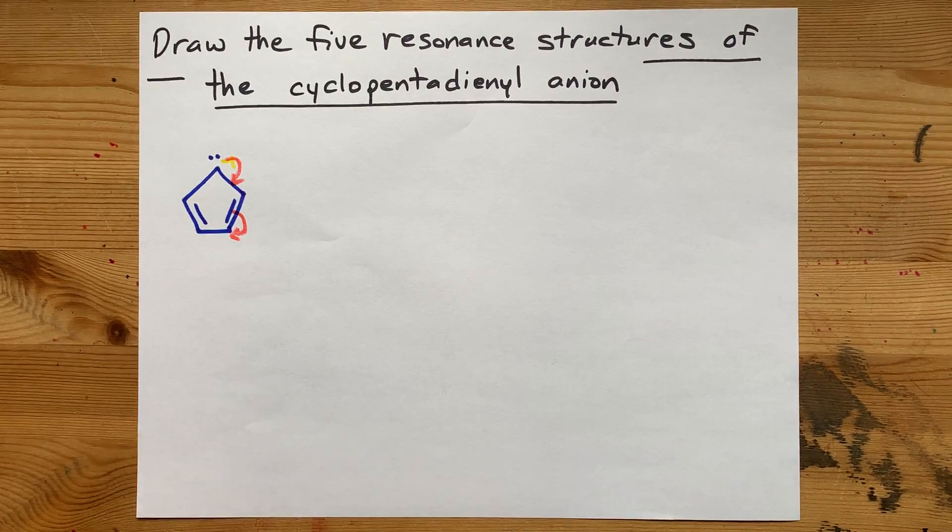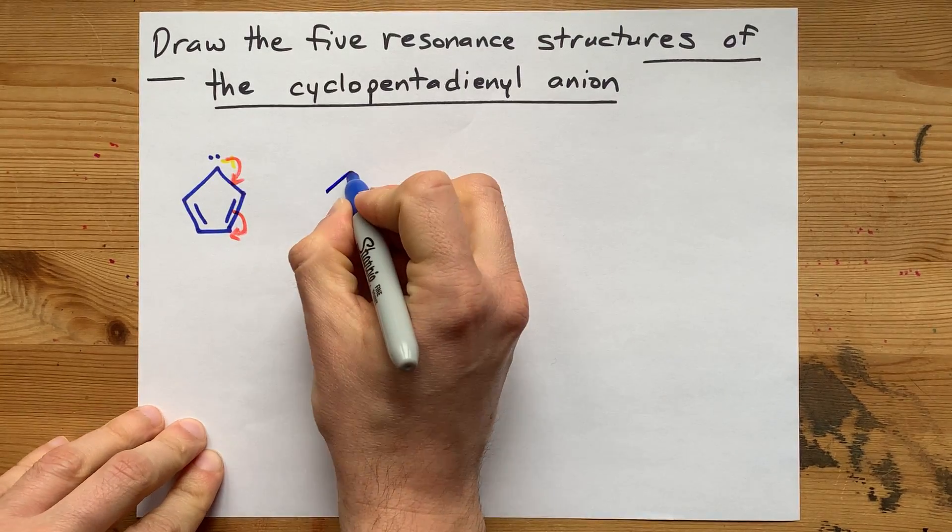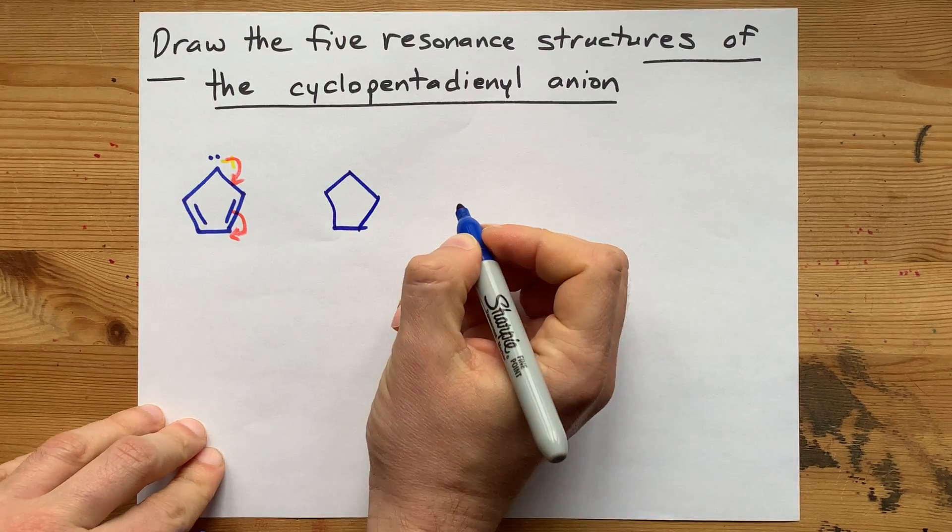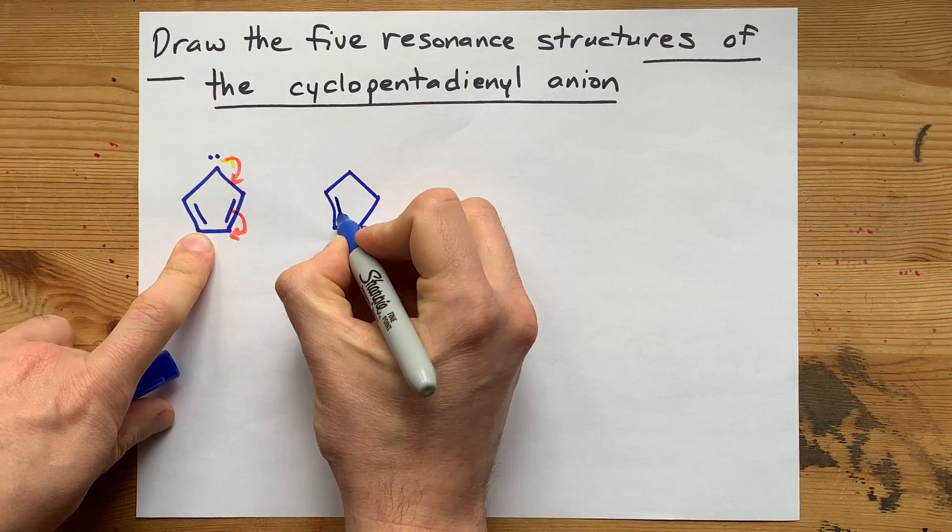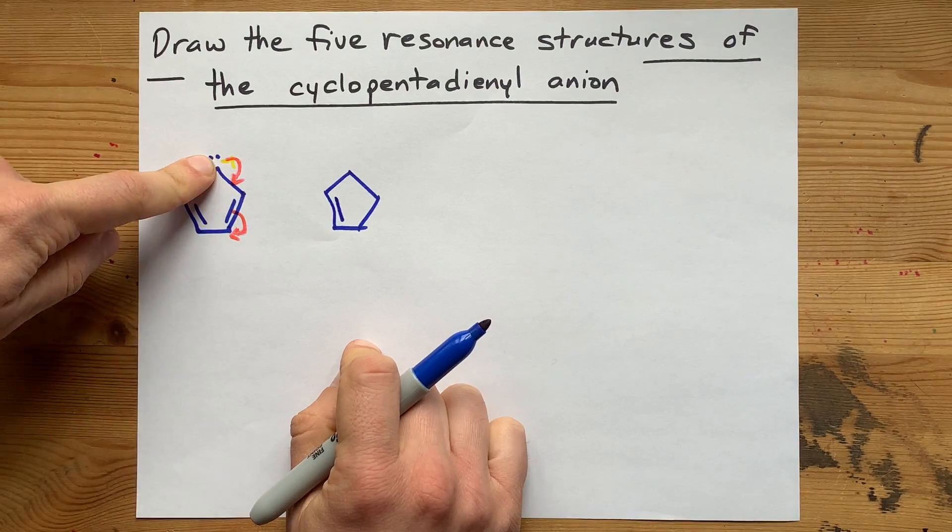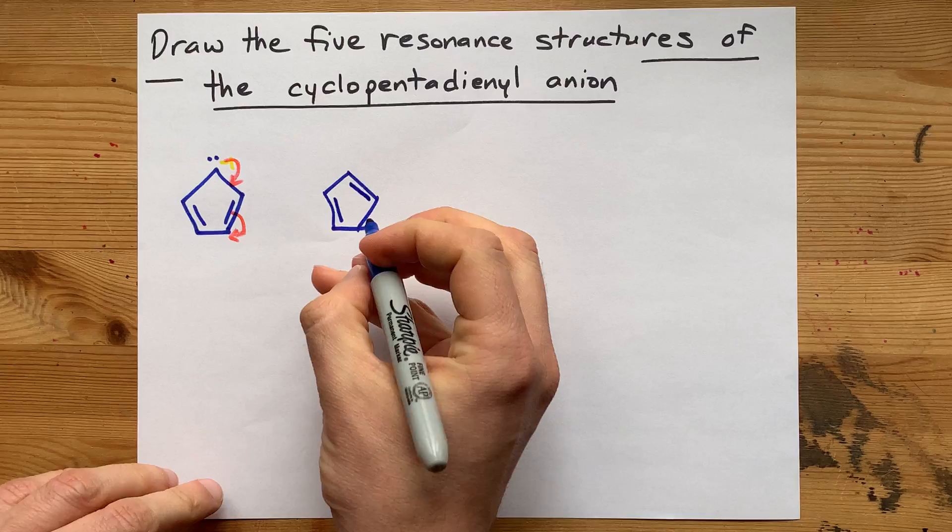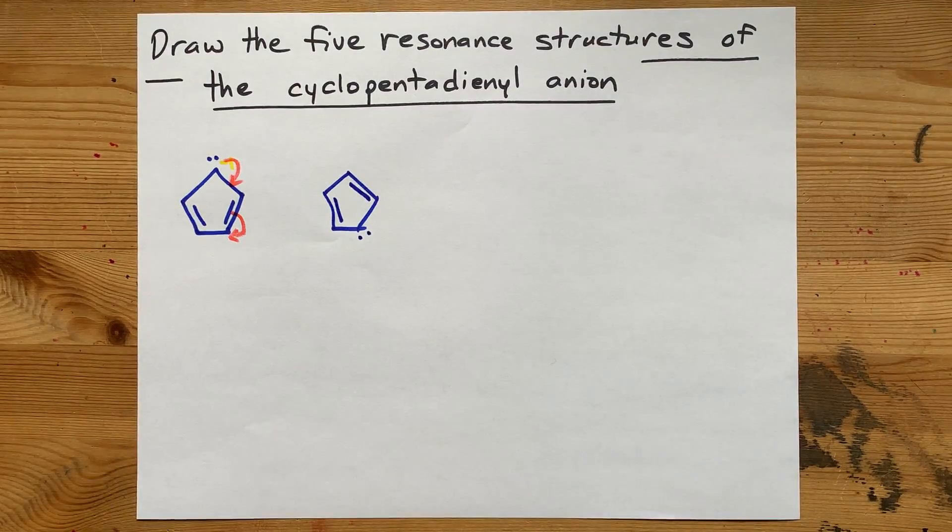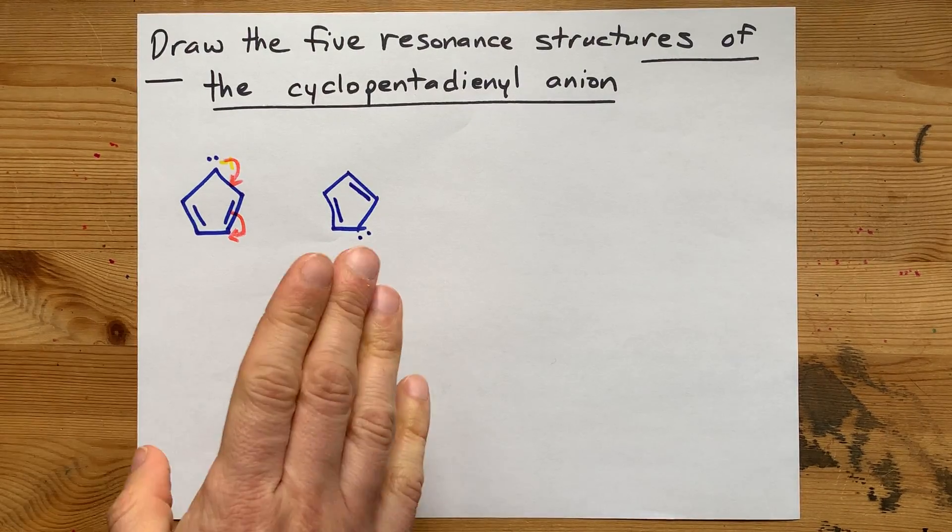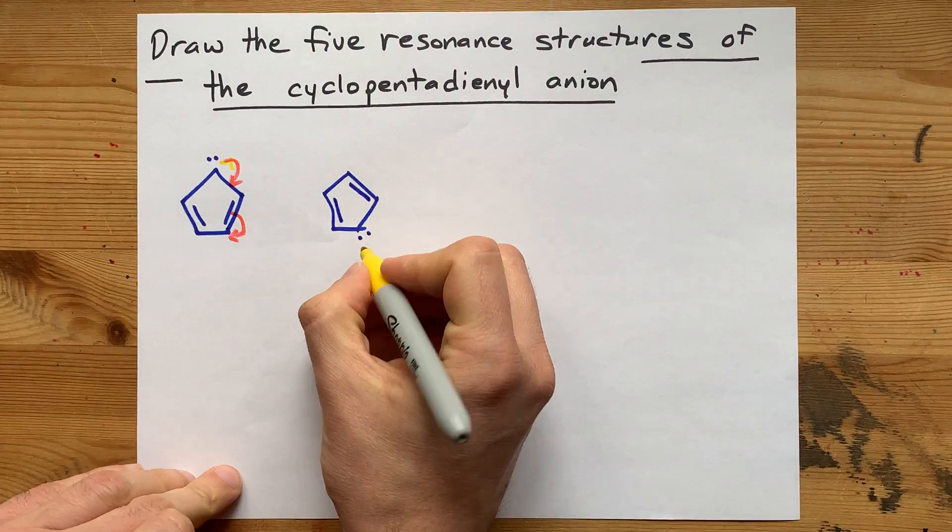That would end up giving you the same ring of five carbons. And this double bond hasn't been touched, but this lone pair has now moved into the molecule here, and you now have a lone pair on that atom there. You might already see how this is going to go.